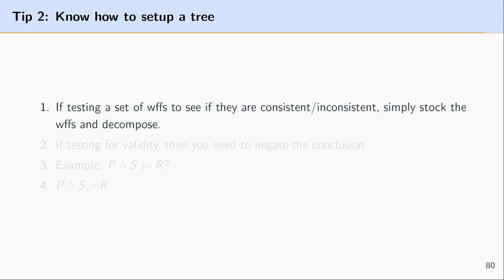Tip two is knowing how to set up a tree and I'll provide a link in the description if you've forgotten how to do this but now truth trees can be used in different ways you might test for consistency or contingency or whether or not a proposition is always going to be true or you might be testing an argument to see if it's valid.